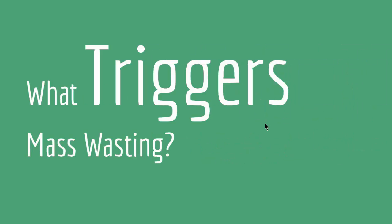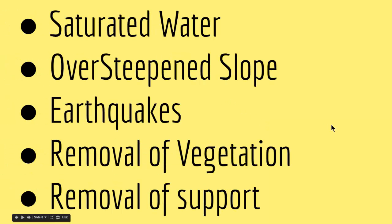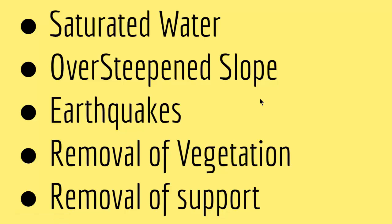What triggers mass wasting or landslides? We have several major reasons. First, saturated water — if there is too much water in soil, the bonding between rock material becomes loose and it is easier for gravity to act on them and create landslides. Overly steep slopes can also cause mass wasting because materials will not stay on a very sharp slope. Earthquakes also create landslides. Removal of vegetation is another trigger, since roots keep soil and material intact — without vegetation, nothing holds the rock materials together. Finally, removal of support — nature sometimes creates support for rock materials to stay on a hill, and when these supports are removed, a landslide occurs.